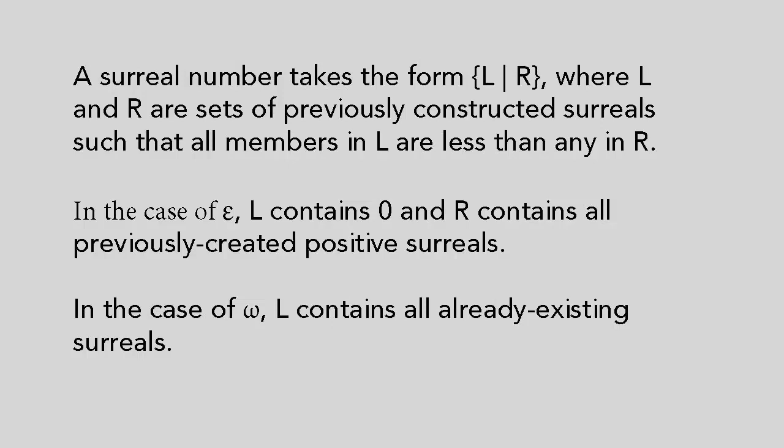In the case of epsilon, L contains zero and R contains all previously created positive surreals, all the dyadic rationals. Meanwhile, for omega, L contains all already existing surreals, so omega is larger than all of them. Minus epsilon and minus omega are also defined, as are x plus epsilon and x minus epsilon for all dyadic rationals x.